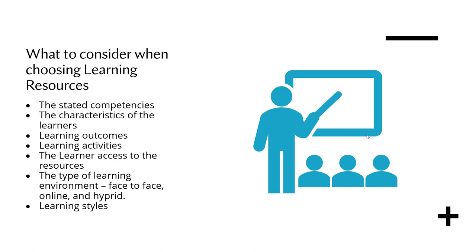What should you consider when choosing learning resources? First, look at competencies — program competencies and course competencies. Second, look at the characteristics of the learners: the age factor, learning ability, level of reading, and pace of learning, since some learners are fast and others are slow.